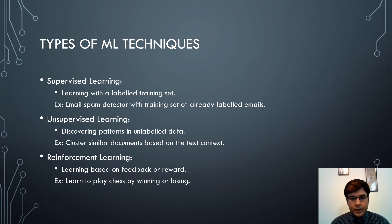There are three types of learning in machine learning. First is supervised learning, in which both data and output are fed to the program to predict output when future data arrives. This is learning with a labeled training set. An example is email spam data, where the program knows from a labeled training set which emails are spam and which belong in the inbox.